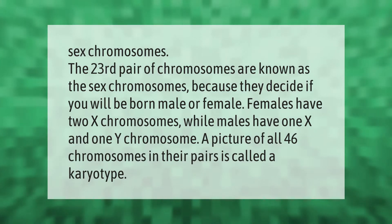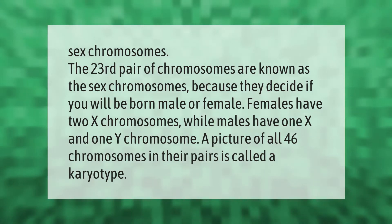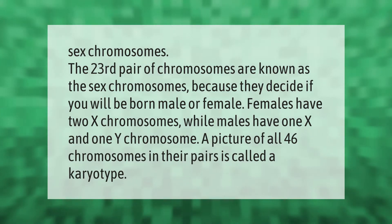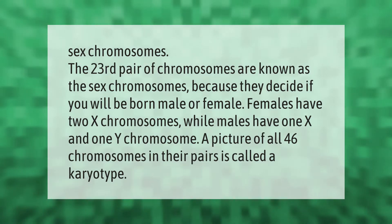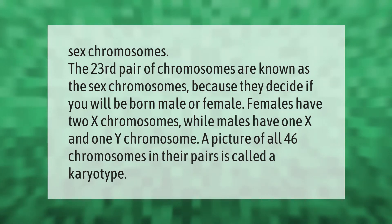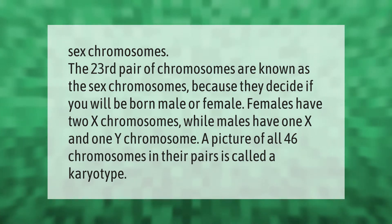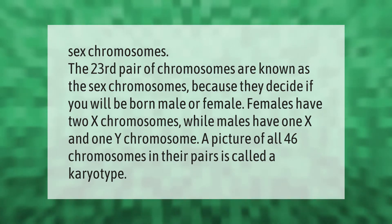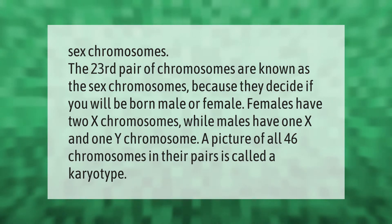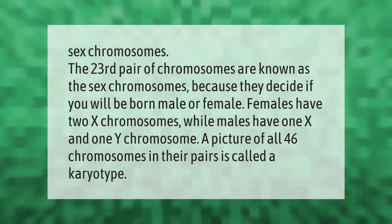Sex chromosomes: the 23rd pair of chromosomes are known as the sex chromosomes because they decide if you will be born male or female. Females have two X chromosomes while males have one X and one Y chromosome. A picture of all 46 chromosomes in their pairs is called a karyotype.